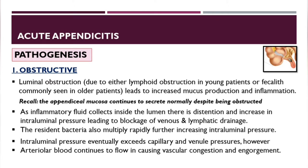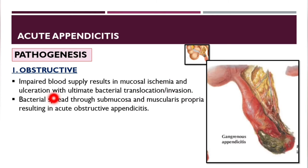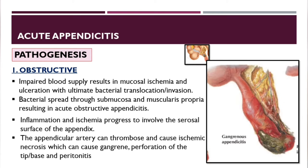The intraluminal pressure eventually exceeds capillary and venule pressure, but arterial blood continues to flow, causing vascular congestion and engorgement. Impaired blood supply results in mucosal ischemia and ulceration, with bacterial translocation. Bacteria spread through the submucosa and muscularis, causing acute obstructive appendicitis. Inflammation and ischemia progress to involve the serosal surface, and the appendicular artery in the mesoappendix can thrombose, causing ischemic necrosis, gangrene, perforation, and peritonitis.